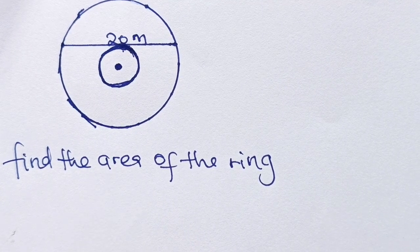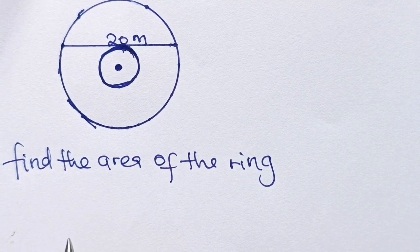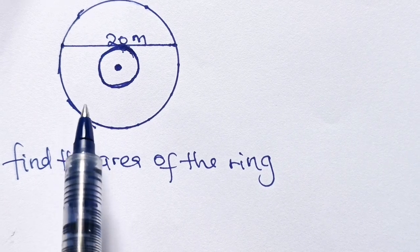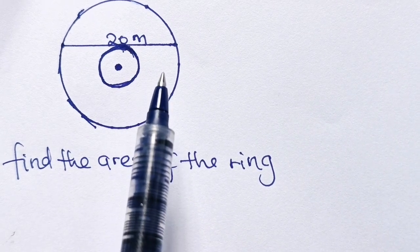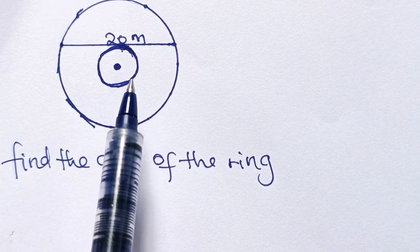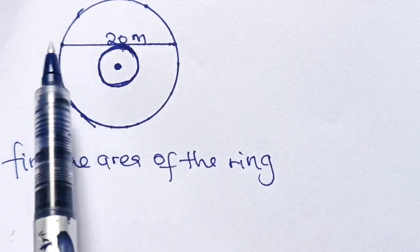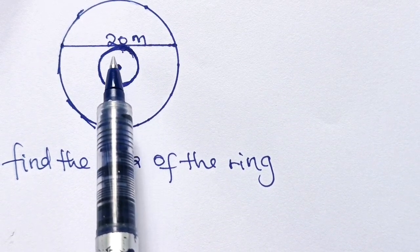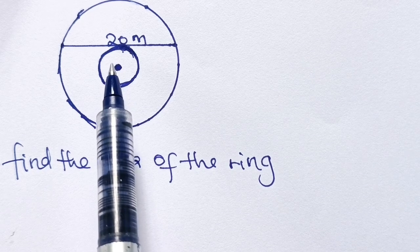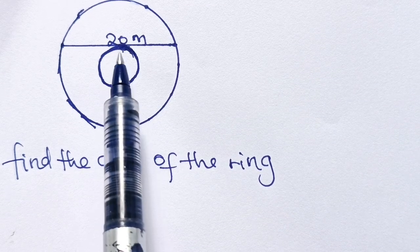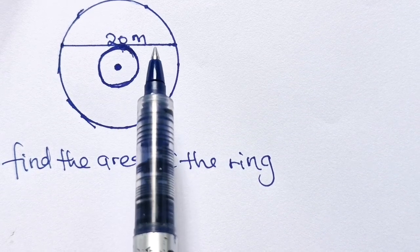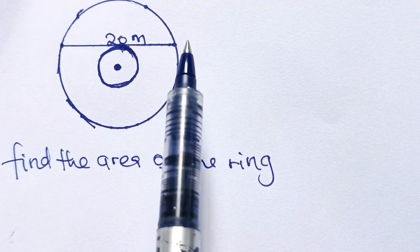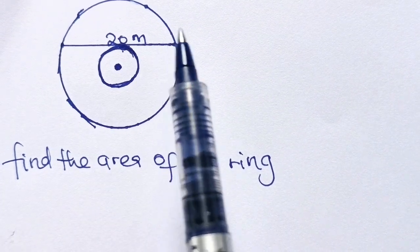Hi everyone, welcome back to my channel. Today we have an amazing math question. The question says: a 20-meter long stick lies on a circular ring. It touches the inner circle — the smaller circle — and extends to the outer edge of the ring on both sides. The question is: what is the area of the ring?